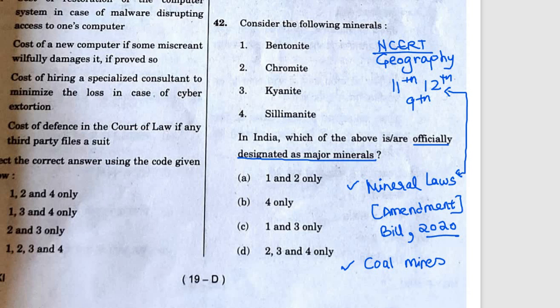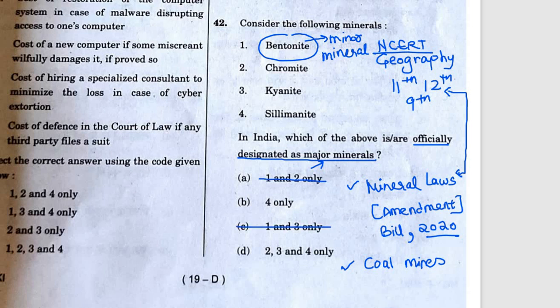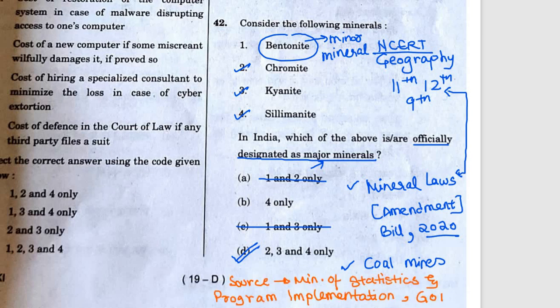If you haven't studied NCERT, this topic was in current affairs. If you haven't studied current affairs, it was in NCERT geography — two options were given to study this topic. Bentonite is a minor mineral, and since the question asks about major minerals, options with bentonite are eliminated. The correct answer is D: statements 2, 3, and 4 are major minerals. The source is the Ministry of Statistics and Programme Implementation, Government of India.